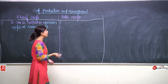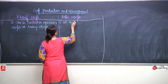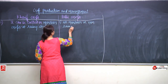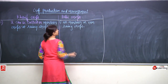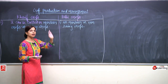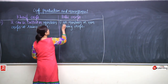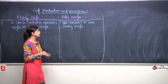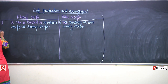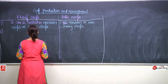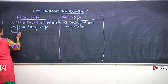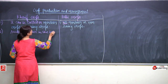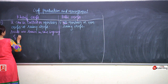Kharif crops can also be known as monsoon crops or rainy crops. These are crops which can be grown only in the monsoon season — they require rains and cannot be grown in some other season. Rabi crops, on the other hand, are non-monsoon or non-rainy crops. These crops cannot be grown in the monsoon season.